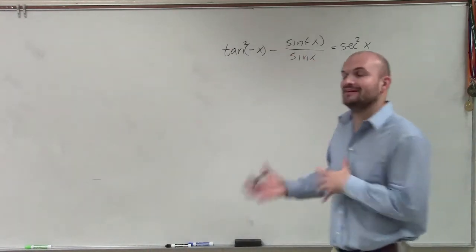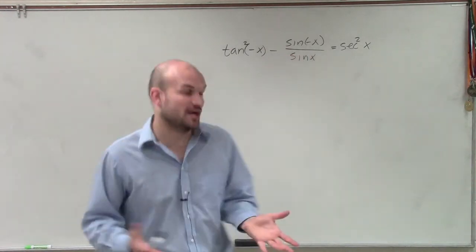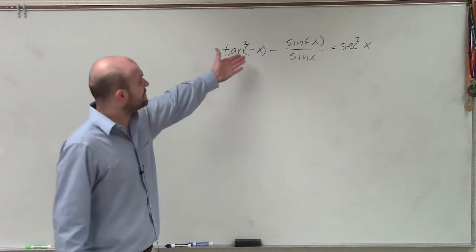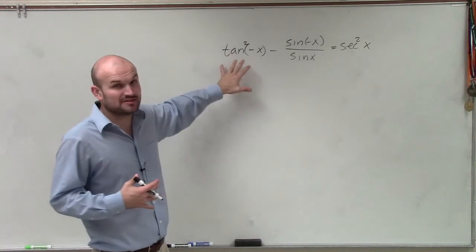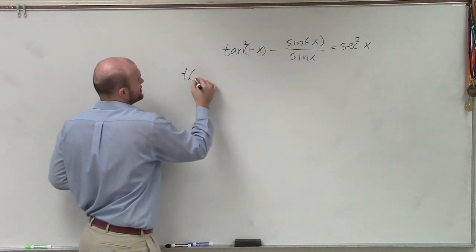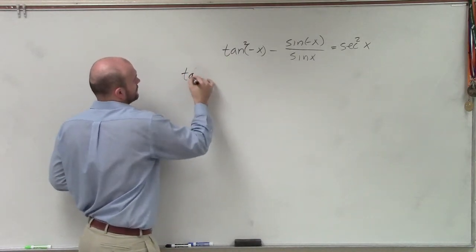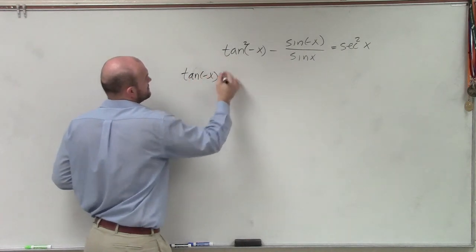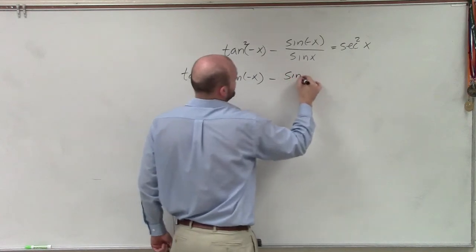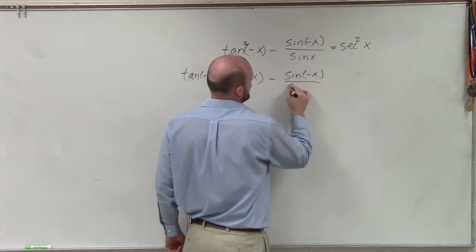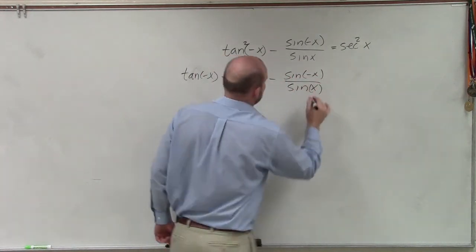Now, when we're looking at the even and odd identities, which is very helpful in this problem when we see that we have these negative inputs, I'm going to want to break this down. Instead of the squareds, I'm going to want to break up tangent into tangent of negative x times tangent of negative x. And that's going to help me apply the even and odd identities a little bit better without making any mistakes.